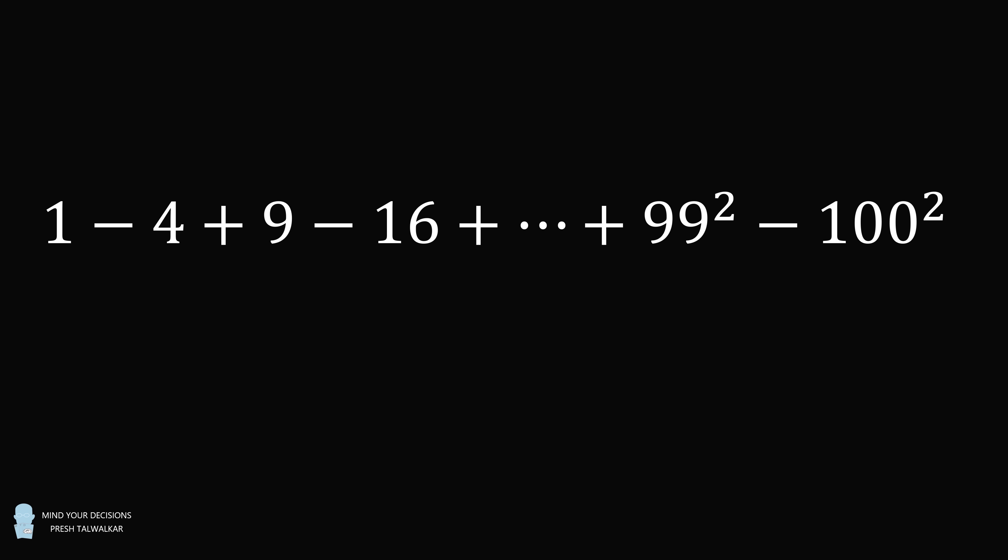Evaluate the following sum: 1 minus 4 plus 9 minus 16 plus so on until the final two terms of plus 99 squared minus 100 squared.